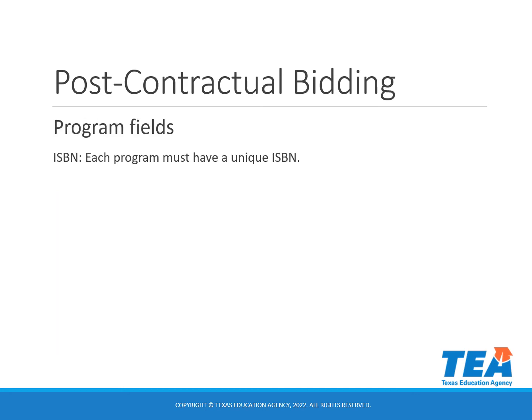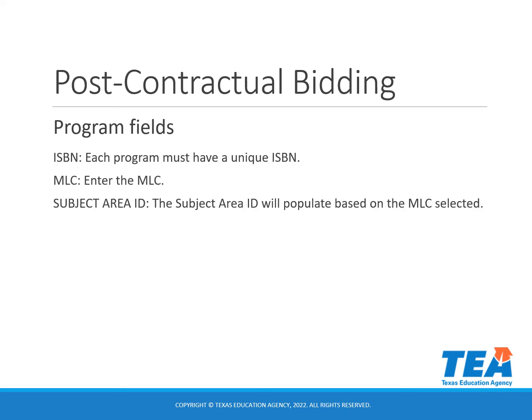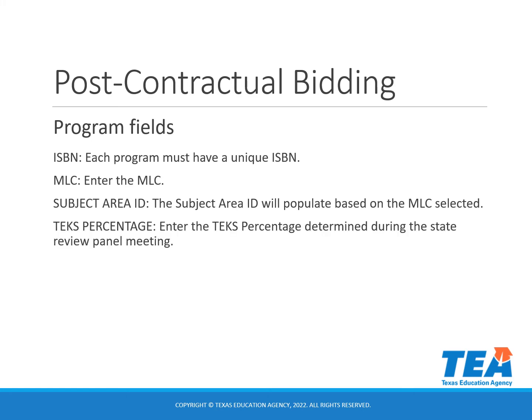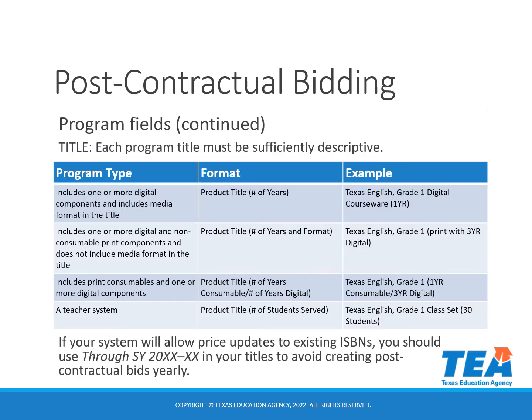We will walk through each of the fields on the program section of the new post-contractual bid form. Each program must have a unique ISBN. You will enter the MLC; the subject area ID will populate based on the MLC selected. In the TEAX percentage, you will enter the percentage determined during the State Review Panel meeting. It is important to remember that districts will see very little information when ordering — they will select an MLC and the program title — so each program title must be sufficiently descriptive.